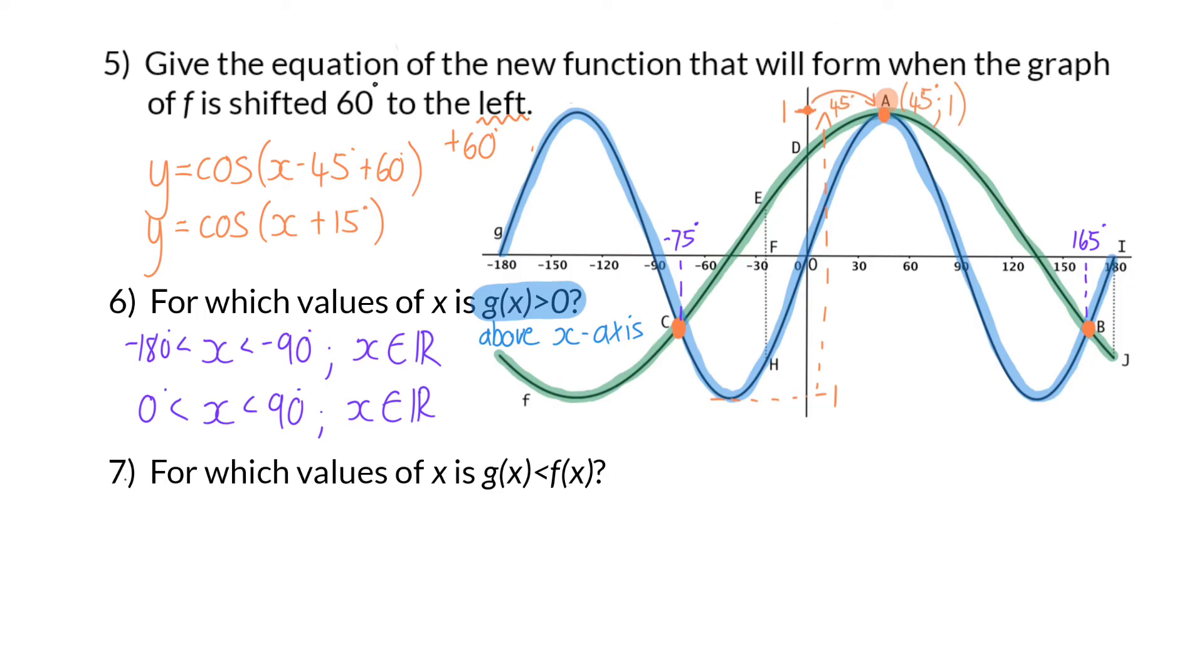Question 7: For which values of x is g(x) smaller than f(x)? Here, we are now comparing the two graphs g and f. That means we will be focusing on their points of intersection. The points of intersection for these two graphs will be at c and at b, and then point a is a touching point, so that's also an important point to keep in mind. These two coordinates, c and b, now divide our sketch into three intervals or three parts, and we are going to have a look at each part separately.